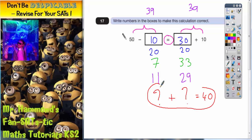So just check that your two numbers added together makes 40. And if they do, you'll get it correct.